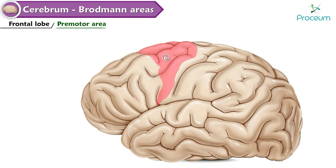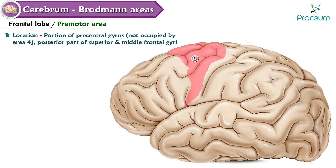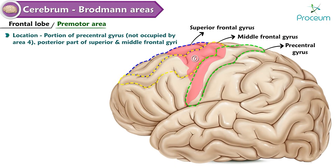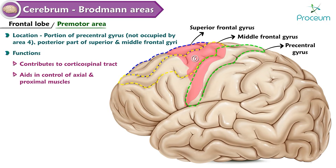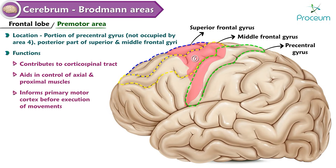Premotor area — Area 6. Location: portion of the precentral gyrus not occupied by Area 4, and the posterior part of the superior and middle frontal gyri. Functions: contributes to the corticospinal tract, aids in control of axial and proximal muscles, and informs the primary motor cortex before execution of movements.